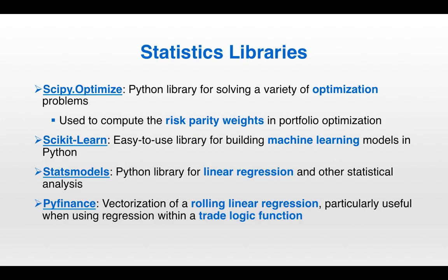Python has a whole host of other very useful statistics libraries. One of them is scipy.optimize — a library for solving a variety of different optimization problems. Specifically, we use scipy.optimize to compute the risk parity weights when reviewing portfolio optimization; it has a solution to that quadratic programming problem. scikit-learn is a great library for building machine learning models in Python. StatsModels is a great library for linear regression and other statistical analysis. And PyFinance has a vectorized implementation of rolling linear regression — if your trade logic function requires recomputing linear regression results for each day, you'll want to use PyFinance because the backend is written in C and so it's going to be a lot faster.